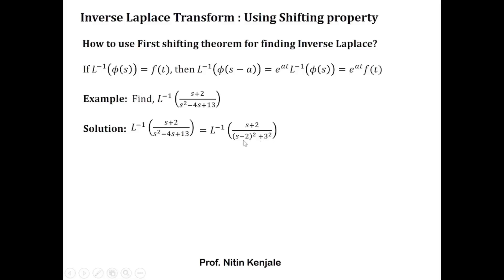Now I see in the denominator we have the (s − 2) term, but in the numerator we have (s + 2). We will try to get (s − 2) in the numerator by adding and subtracting appropriately. In this way, φ(s) is now written entirely in terms of (s − 2).